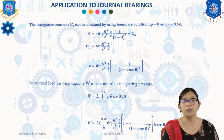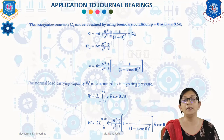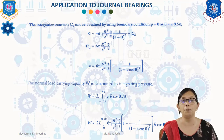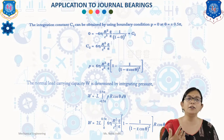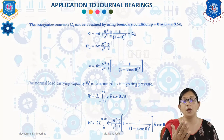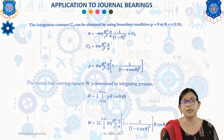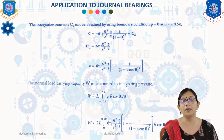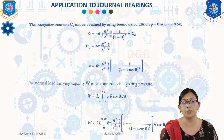The integration constant C₂ is determined using the boundary condition p = 0 at θ = ±0.5π. Applying this condition gives C₂ = 6η·r²/c² · ε̇/ε. Finally, the pressure equation is: p = 6η·r²/c² · (ε̇/ε) · [1 − 1/(1 − ε·cos θ)²].